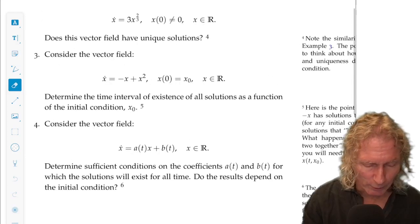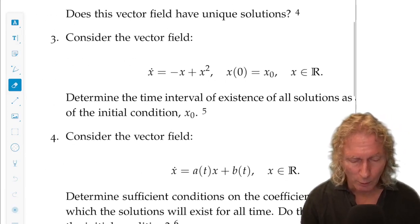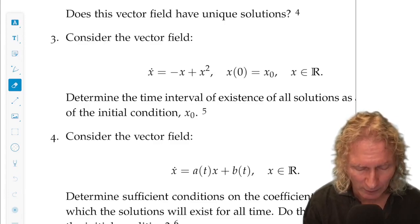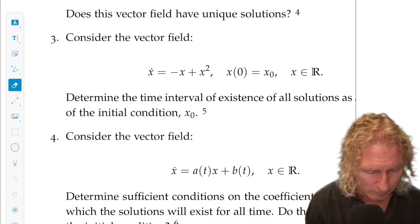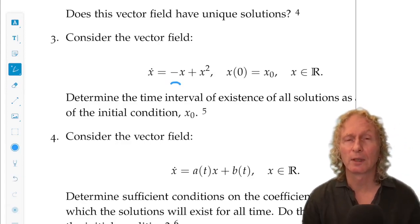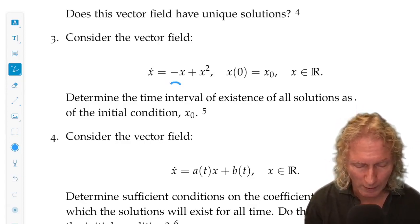Okay, problem three is interesting. We've looked at pieces of it. By that I mean we looked at the linear equation, x dot equals ax, in this case, a equals one minus one, and we looked at x dot equal x squared.